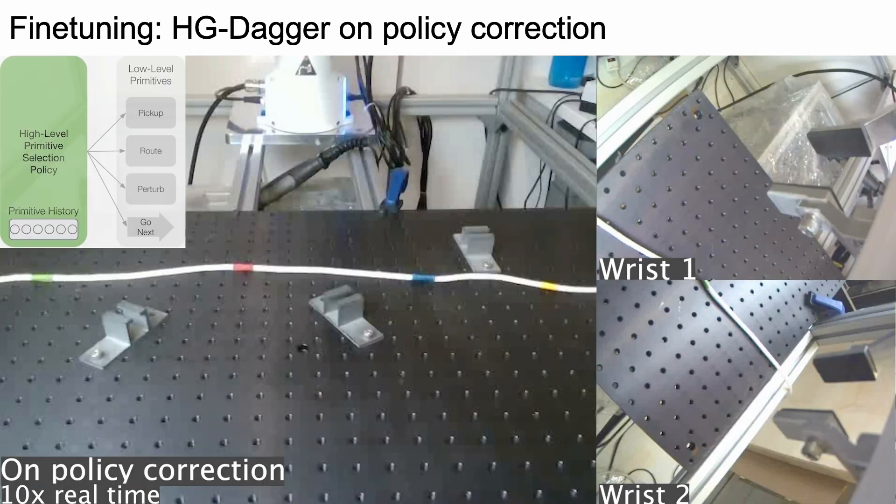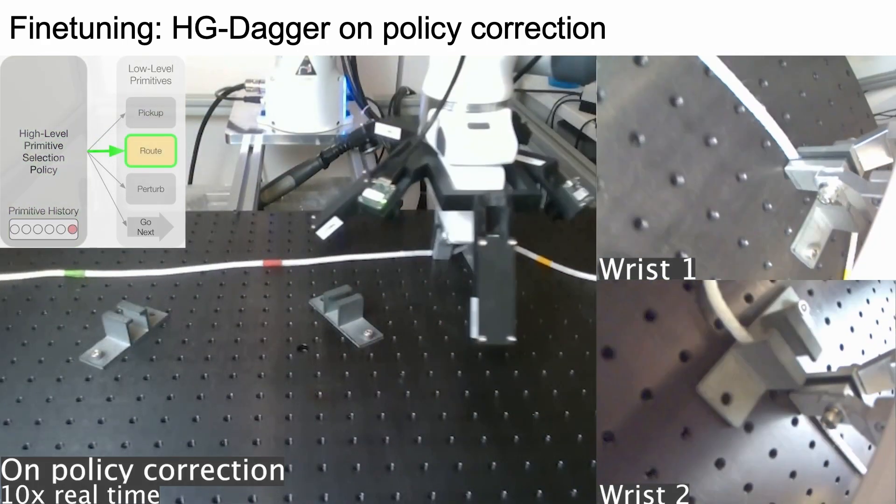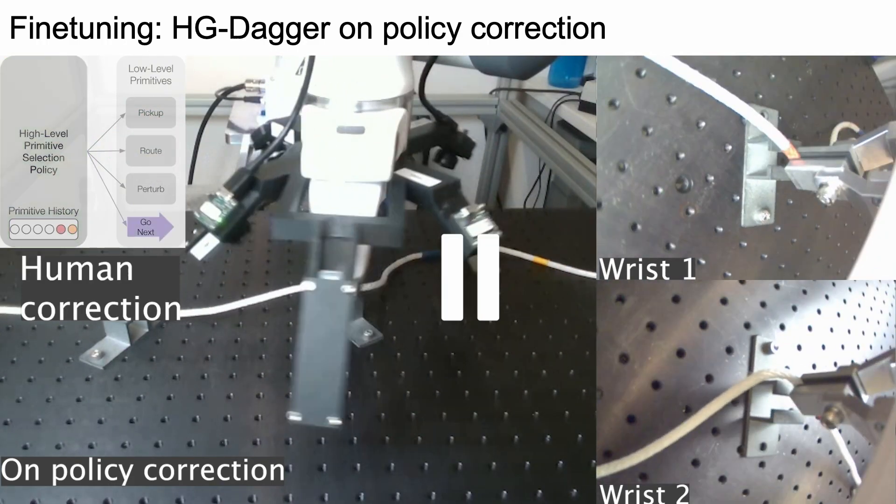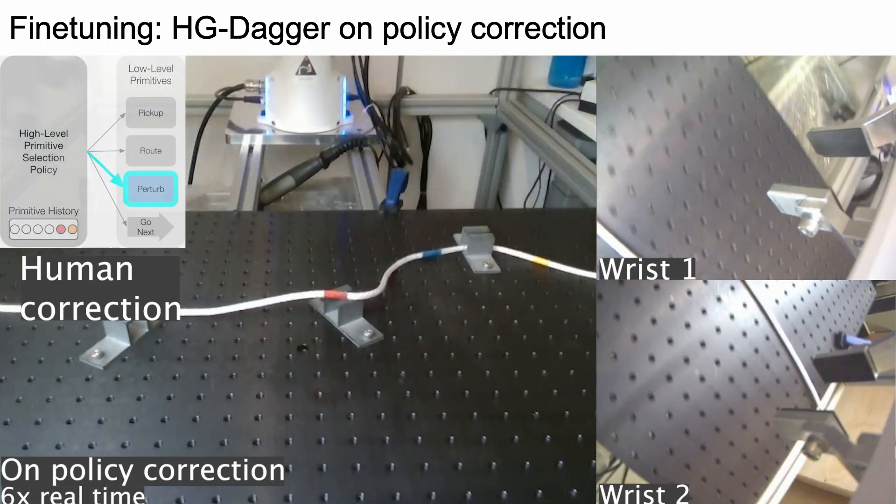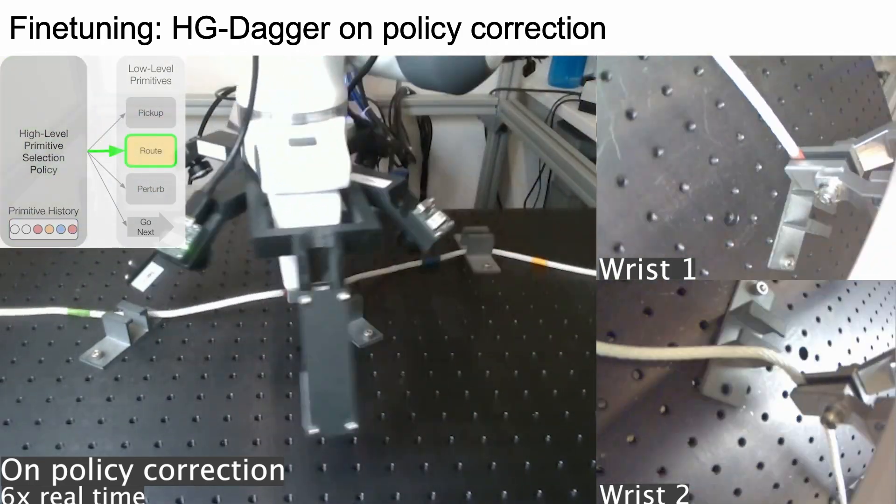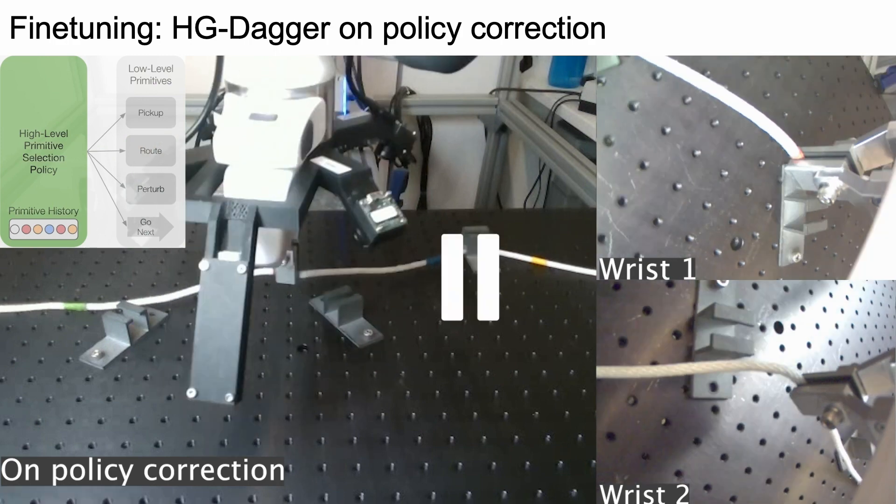Additionally, by only collecting a small amount of on-policy correction data in HG-dagger fashion, we can fine-tune our model and enable generalization to unseen clip configurations in the offline dataset. As shown in the video, when a zero-shot policy takes an agreeable action with the human expert, we allow it to continue the trajectory. However, when it makes a mistake, the human expert performs on-policy correction.